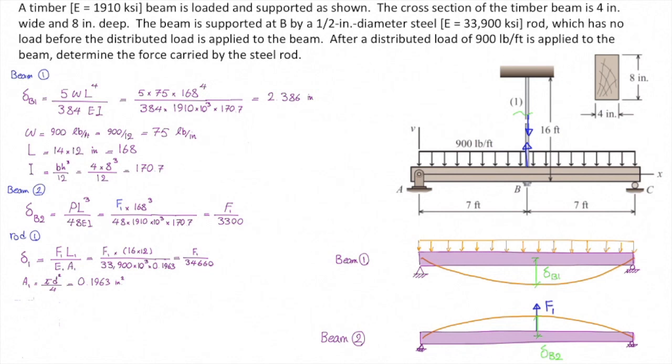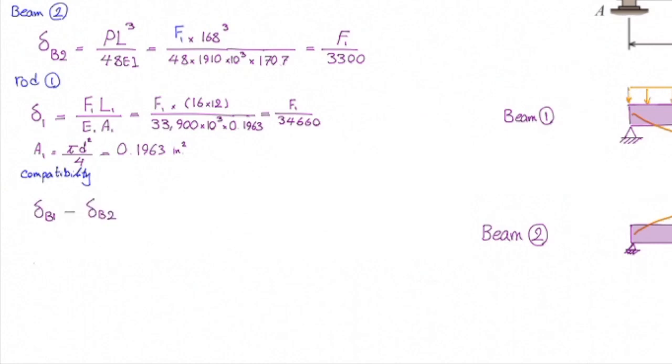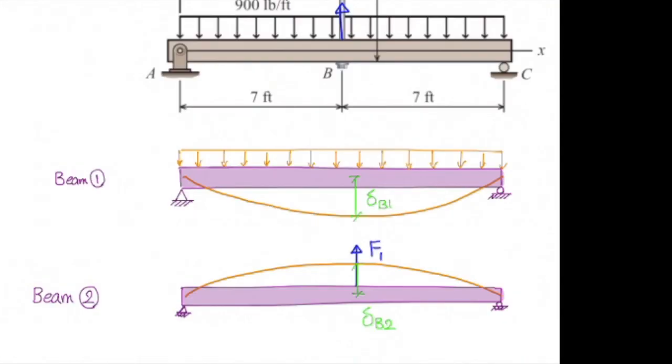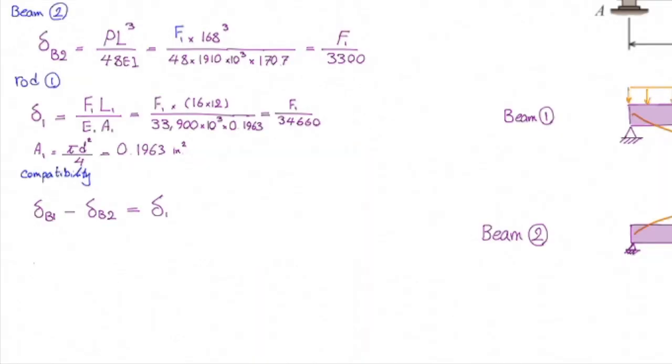Now, we are ready to establish our compatibility of deformations. As we discussed, compatibility of deformations would be delta B1 minus delta B2 is equal to elongation in that rod, or delta 1. Here, I used negative sign for delta B2 because following the direction of the applied force, the direction of deflection would be opposite to the direction of deflection caused by the distributed load. Alright. Now, we can plug the values into this equation and solve it for F1. Note that the only unknown parameter in this equation is F1. And once we solve that, we get F1 equal to 71.90 pound, or 7.90.